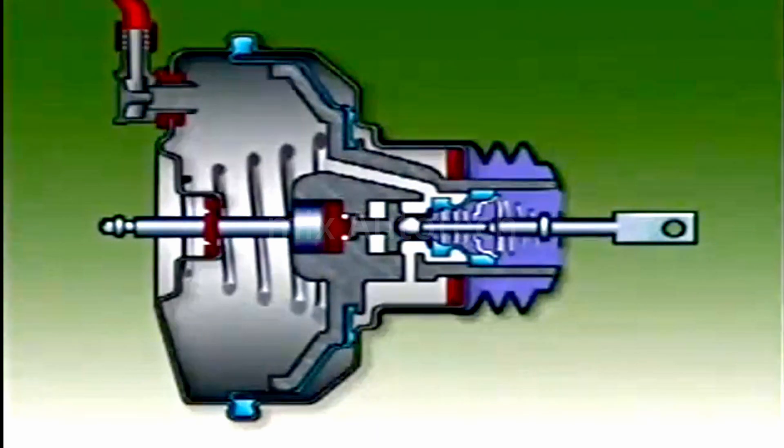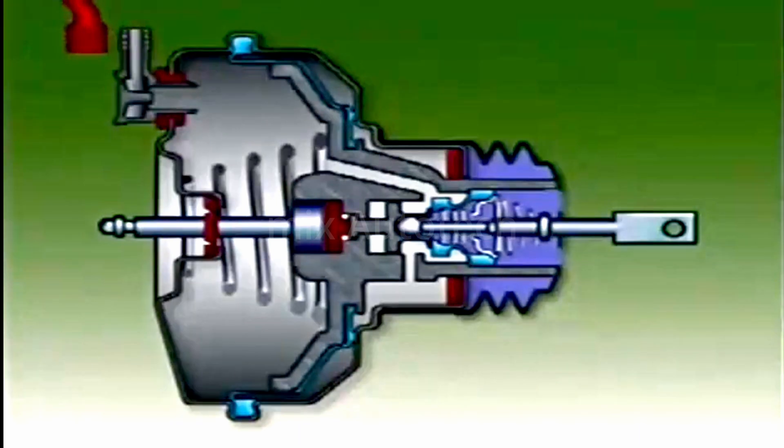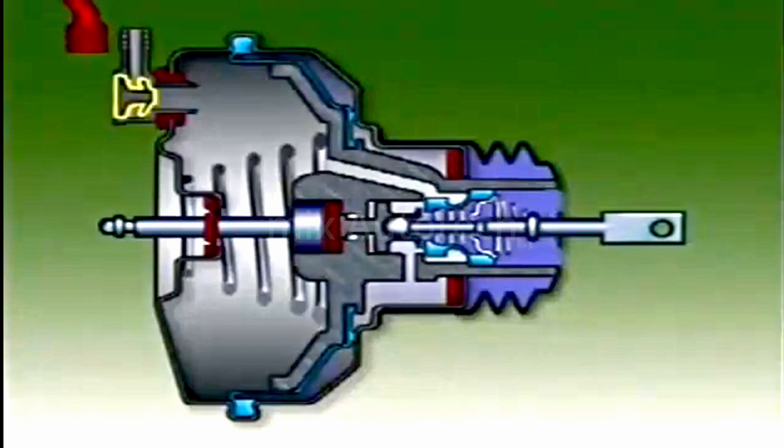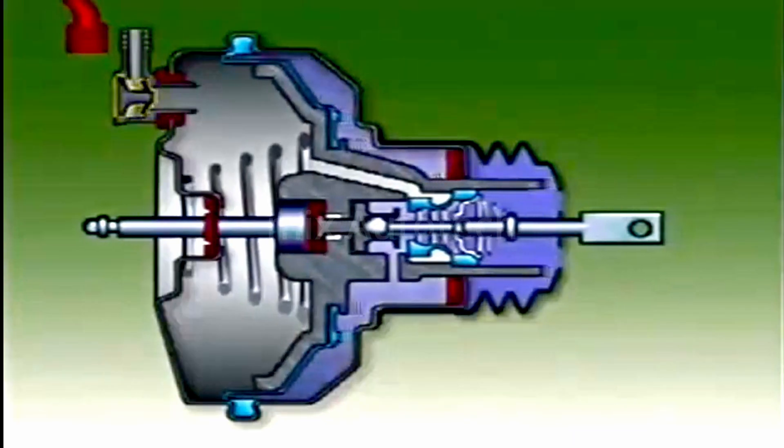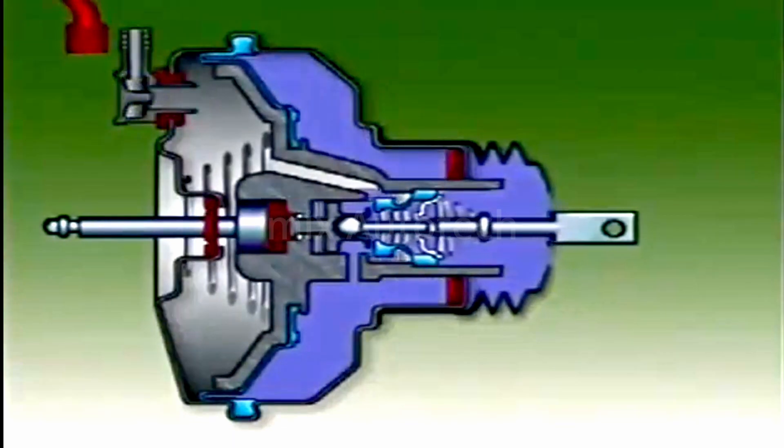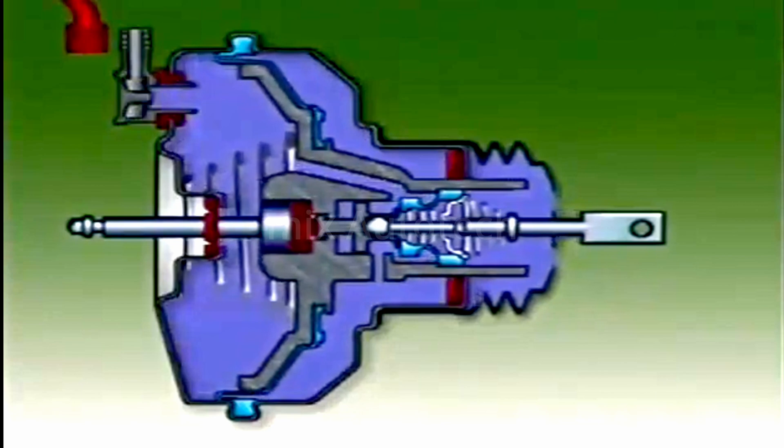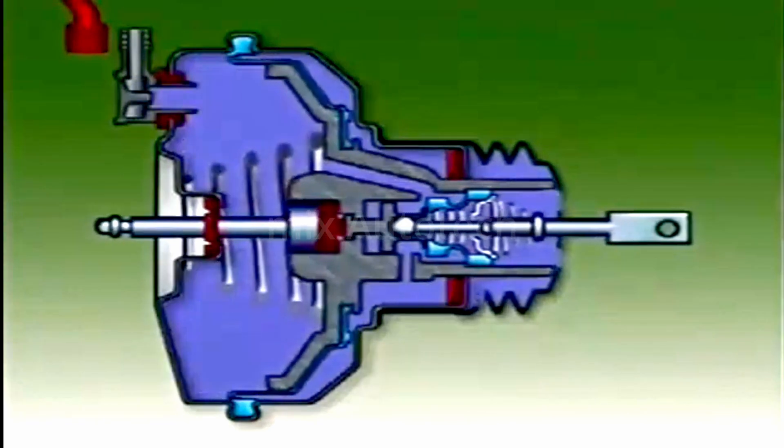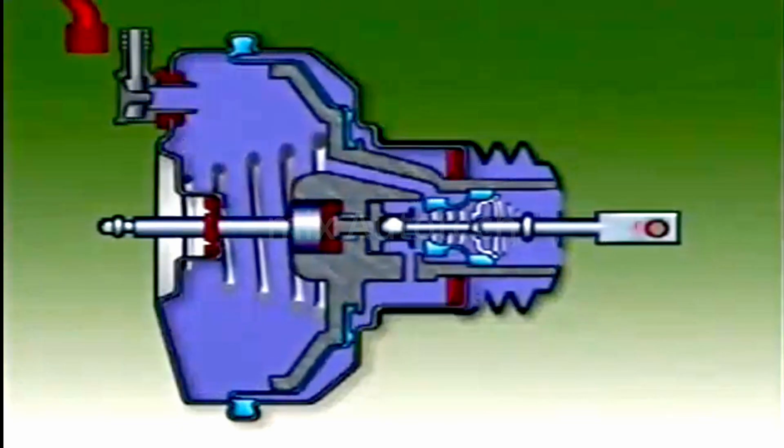When the engine is switched off or stops for any reason, no vacuum is available. The vacuum remaining in the booster held by the non-return valve will provide for at least one power boosted application. After this, the brakes will still operate, but without power assistance they require more effort from the driver.